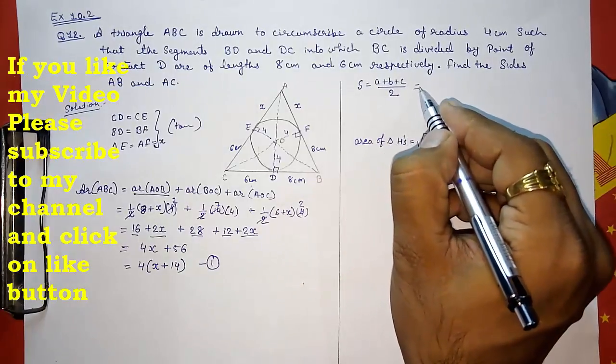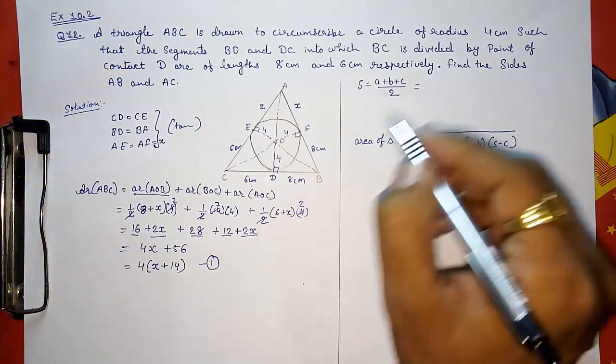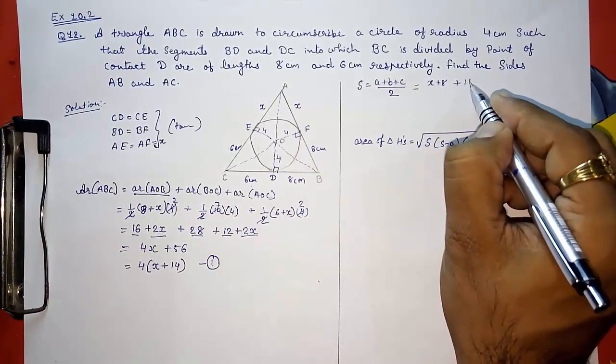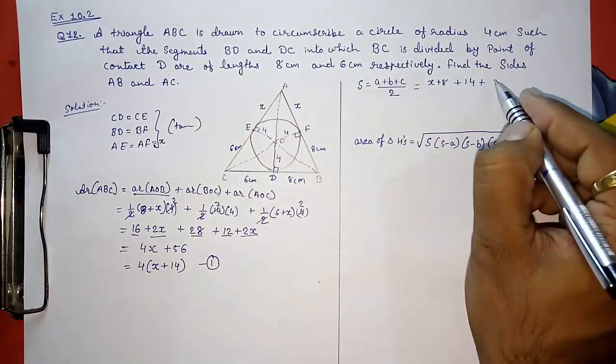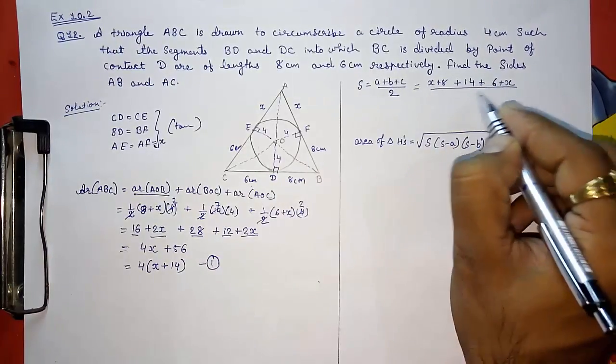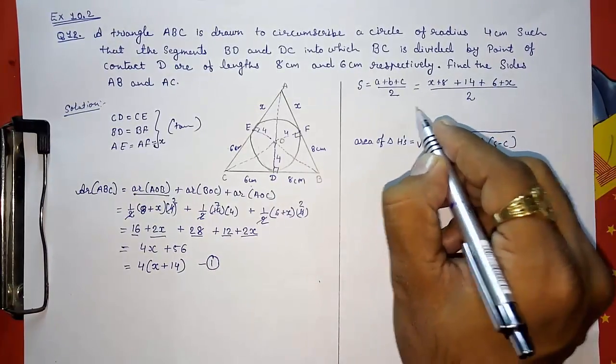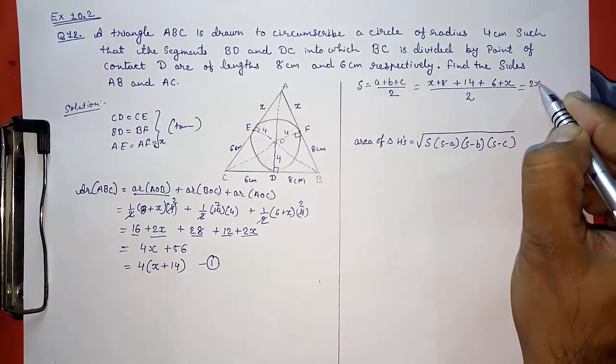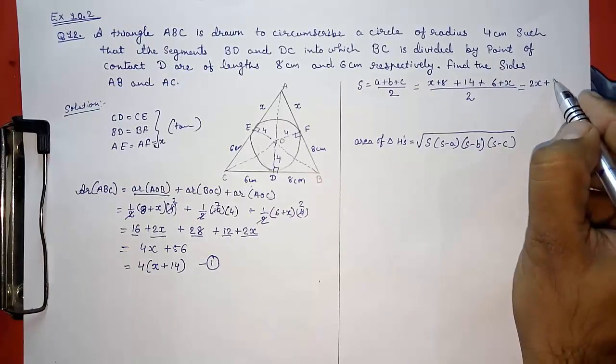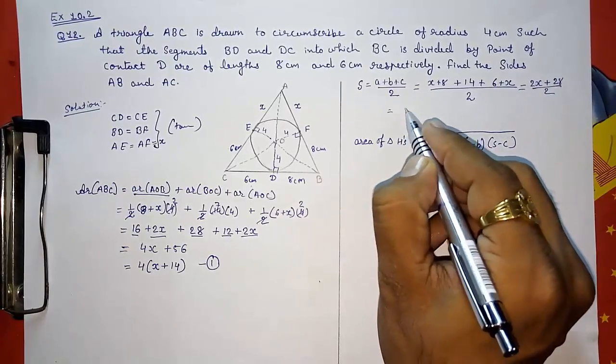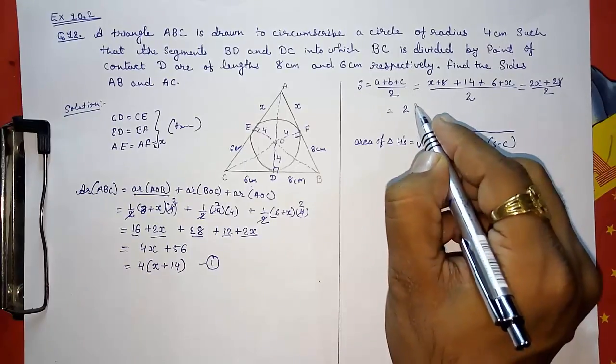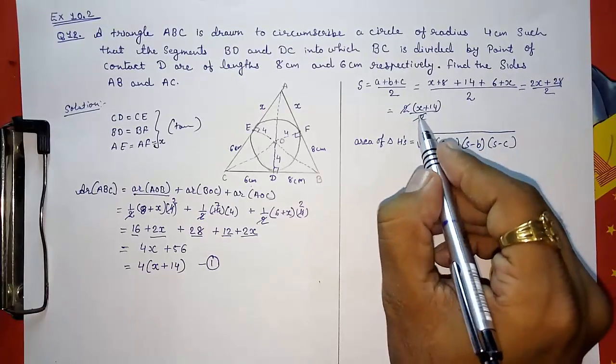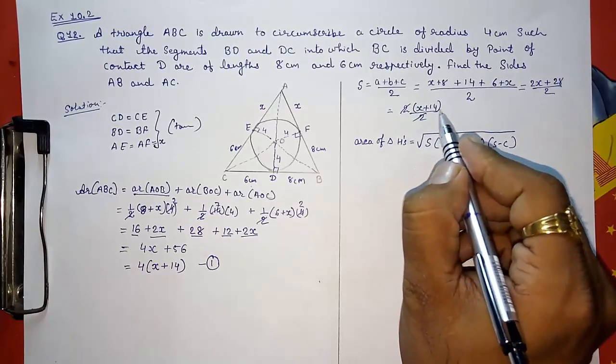So how to find this? We know it's A, means this side 8 plus X, plus this base that is 14, plus this side that is 6 plus X, whole divided by 2. So you will get the sum: 2X plus 28 by 2. Take out 2 common. From this we will get 2 into (X plus 14) by 2. So 2 gets cancelled and your S will be X plus 14.